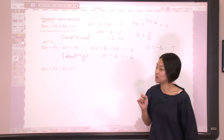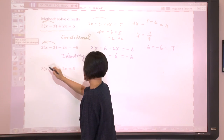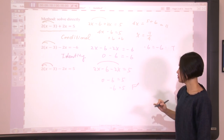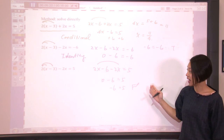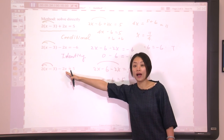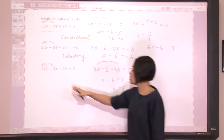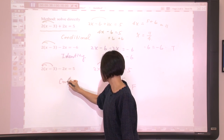Let's check the last one. Let's distribute 2 again. We will have 2x minus 6 minus 2x equals 5. Combine the like terms: 0 minus 6 equals 5, so negative 6 equals 5. This is false. Because this is always false, it implies no matter which number you pick for x, after you plug back, you will always have negative 6 equals 5, which is a false statement. Meaning the original equation is a contradiction.